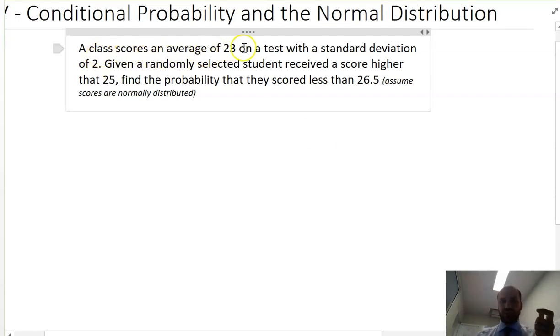A class scores an average of 23 on a test with a standard deviation of 2. Now keep over this next line. It just says assume scores are normally distributed so we can use the normal distribution. Given a randomly selected student received a score higher than 25, find the probability that they scored less than 26.5.